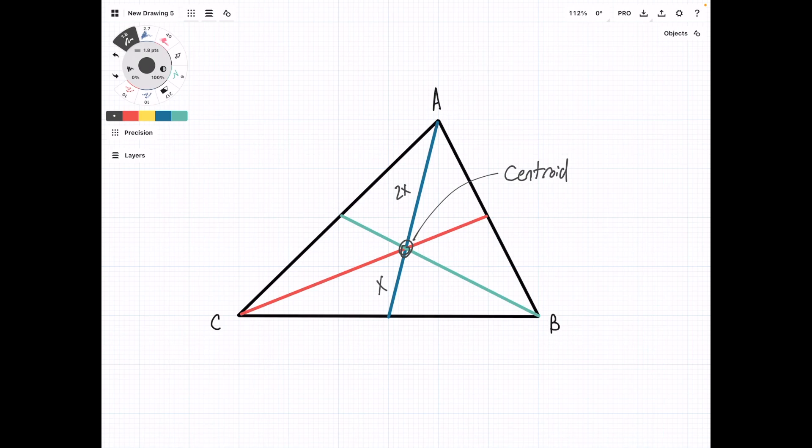When we draw out all three medians like we just did, we will also notice that the larger triangle is divided into six smaller triangles, and each of these smaller triangles is going to have the same area.